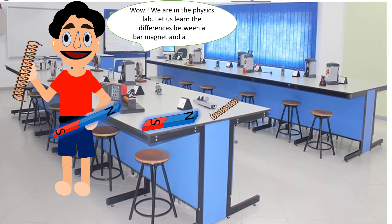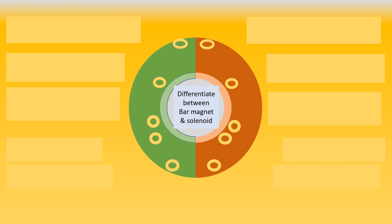Wow, where are we children? We are in the physics lab. Let us learn the differences between a bar magnet and a solenoid. Now let's see the differences between a bar magnet and a solenoid.